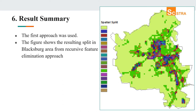The results show that the spatial data can split areas into different groups that do not belong to the same location but share spatial characteristics. The figure shows the resulting splits in the Blacksburg area from the recursive feature elimination approach. There is a green area that does not belong to the same location but has similar spatial patterns, and there is a mix in the downtown area — they do not belong to the same location but share the same spatial characteristics.